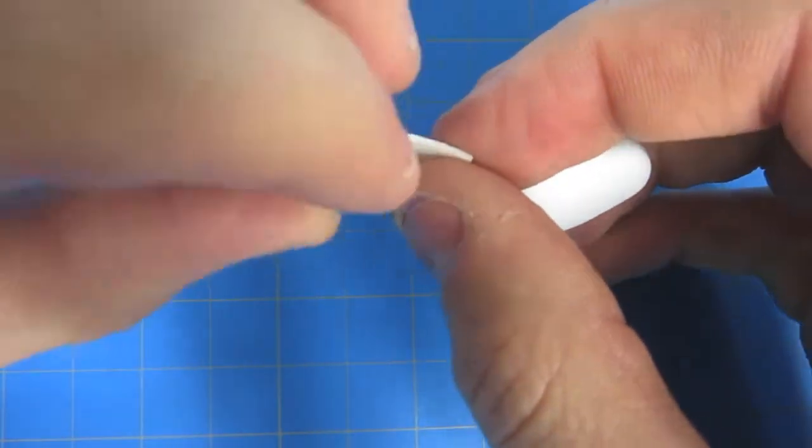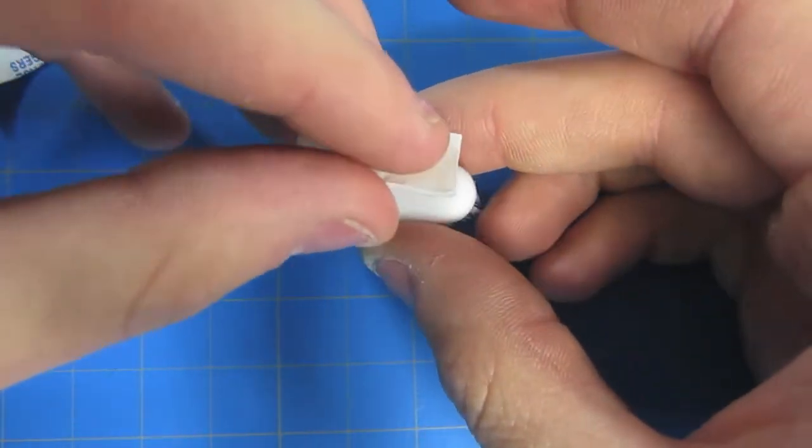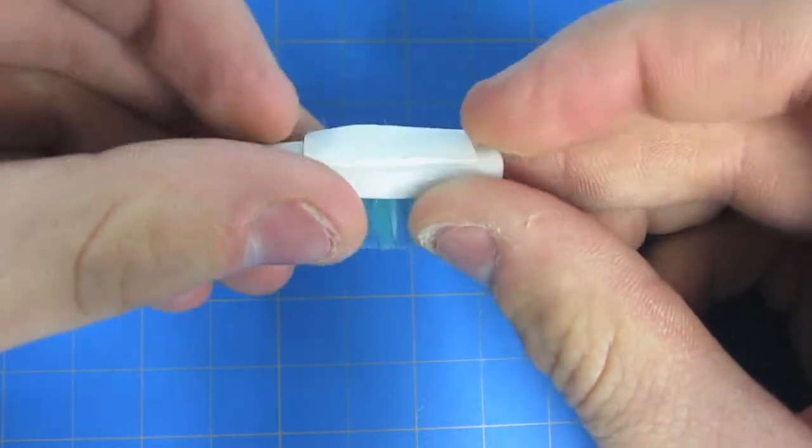Take your double-sided foam tape and put it on top of the toothbrush head. When it's down nice and secure, peel the other layer off.